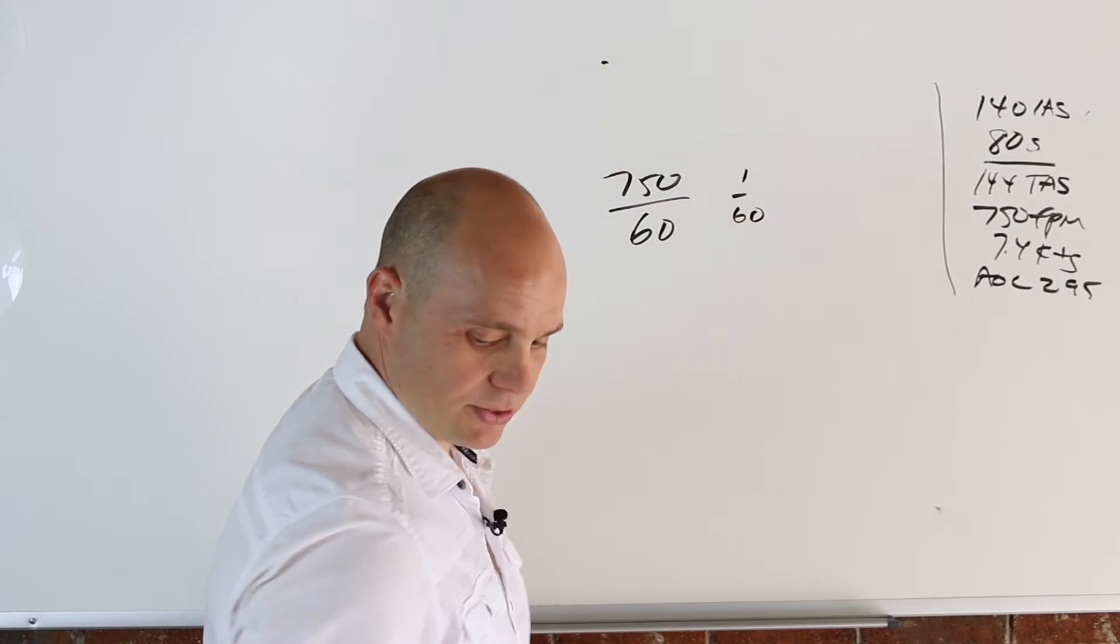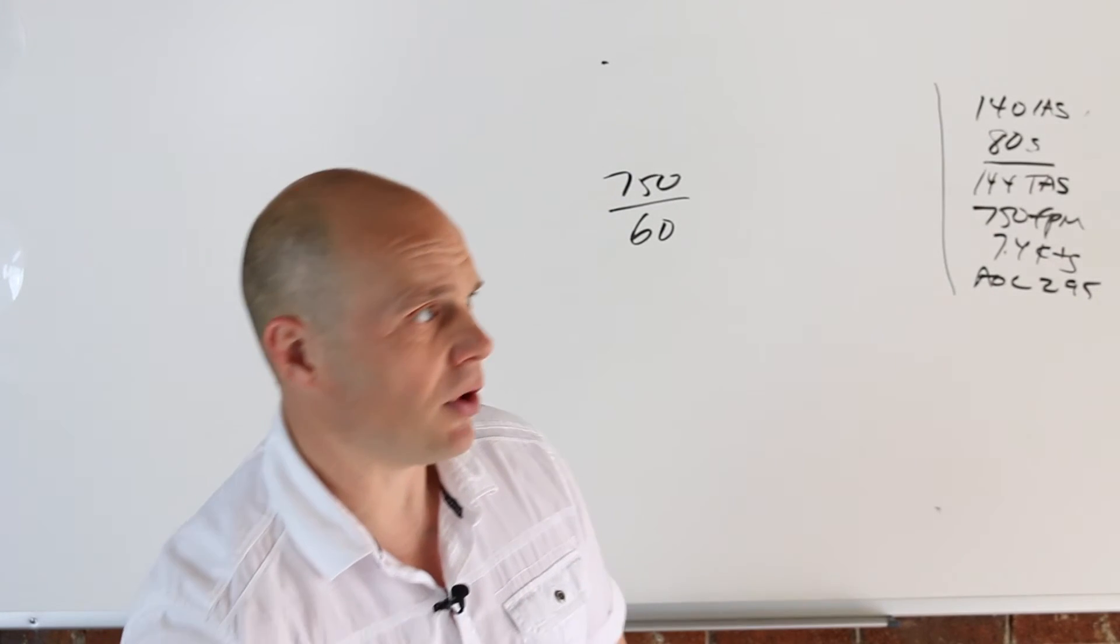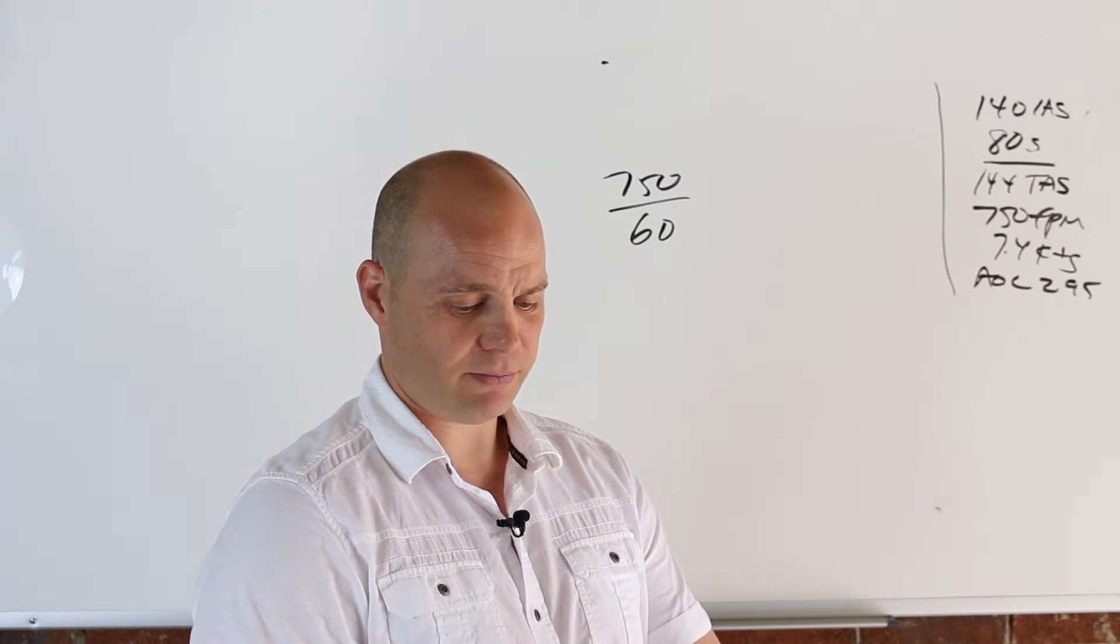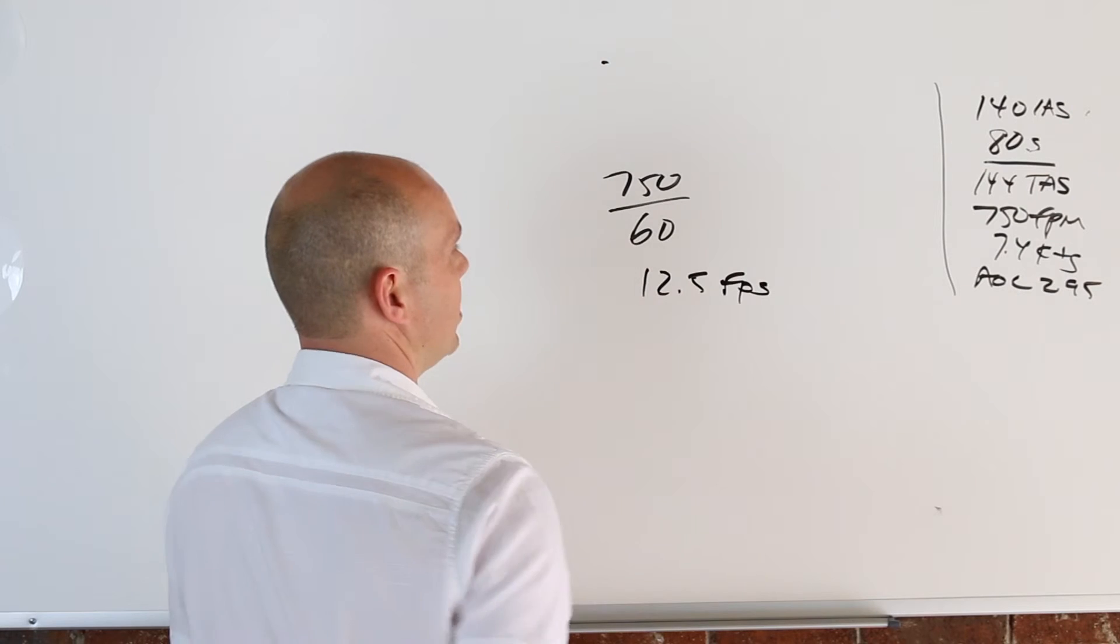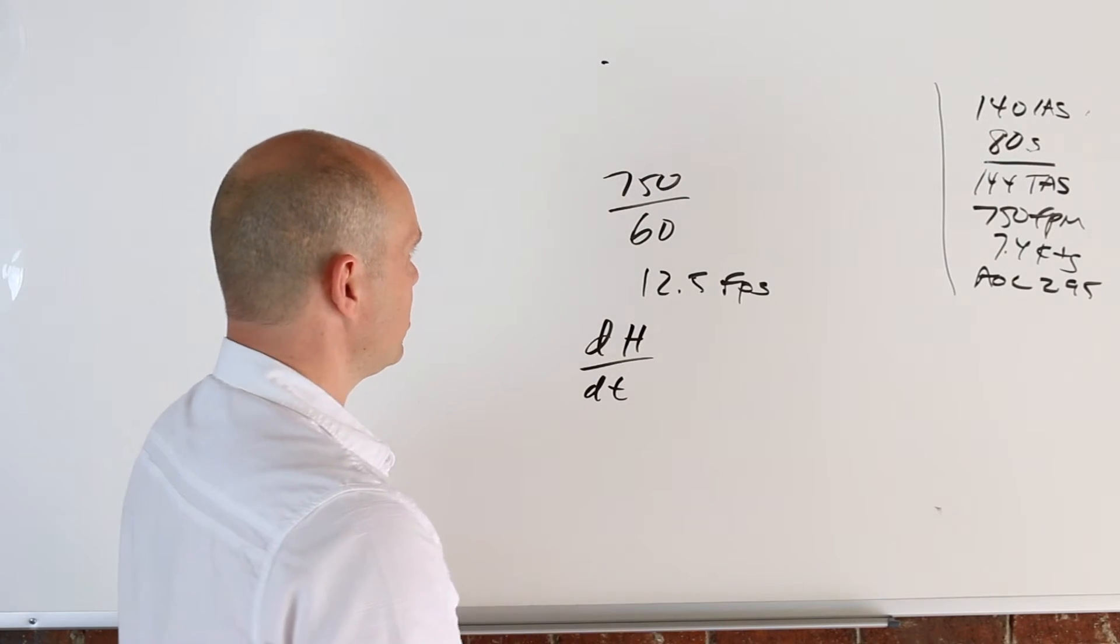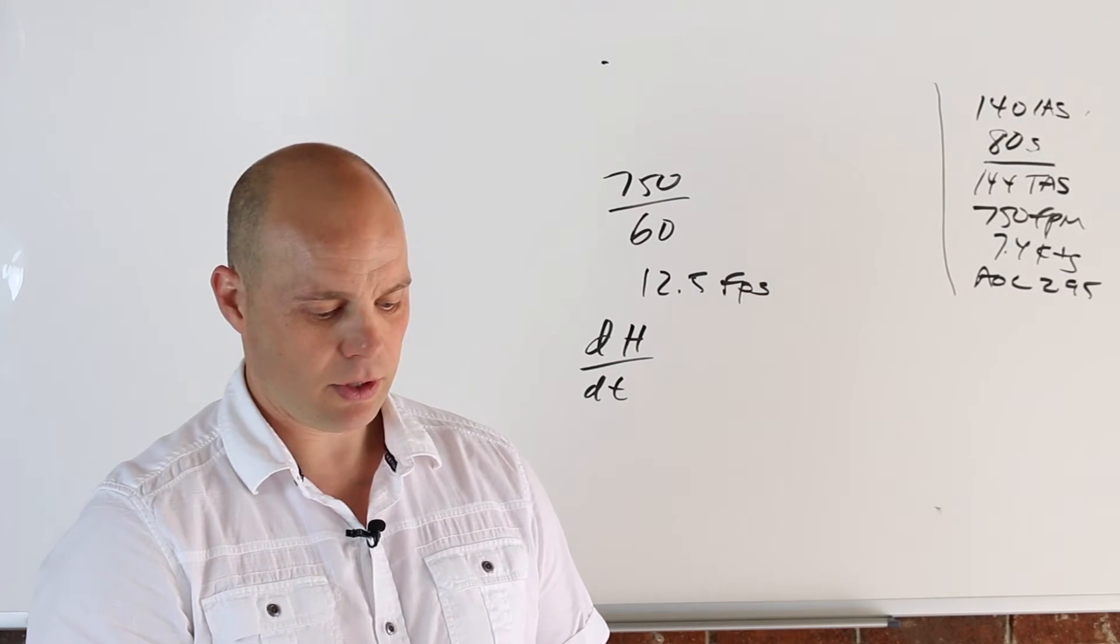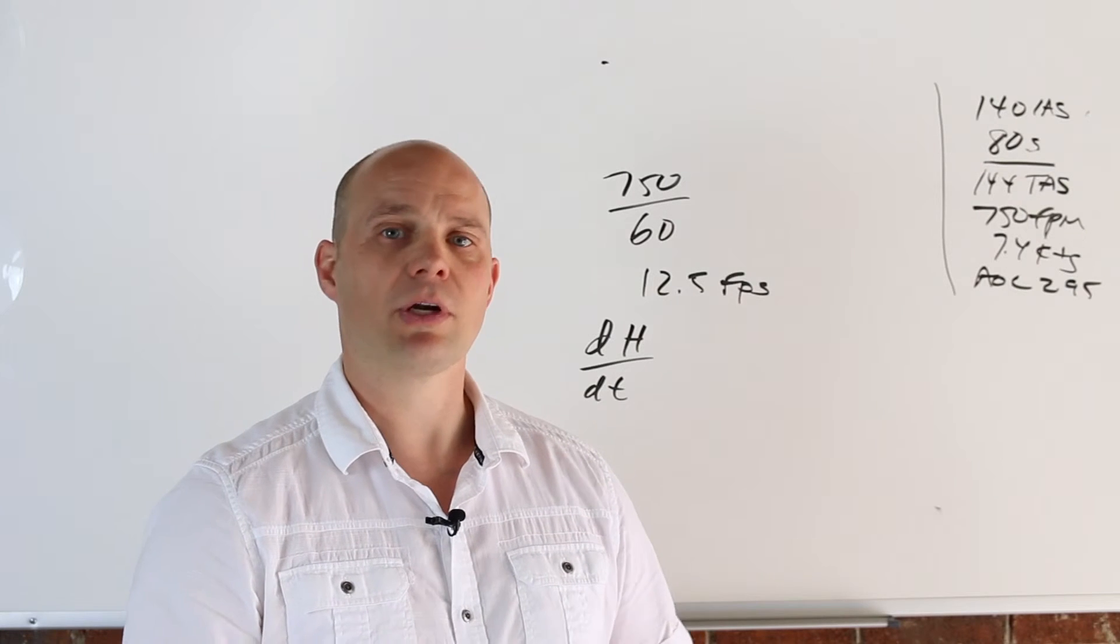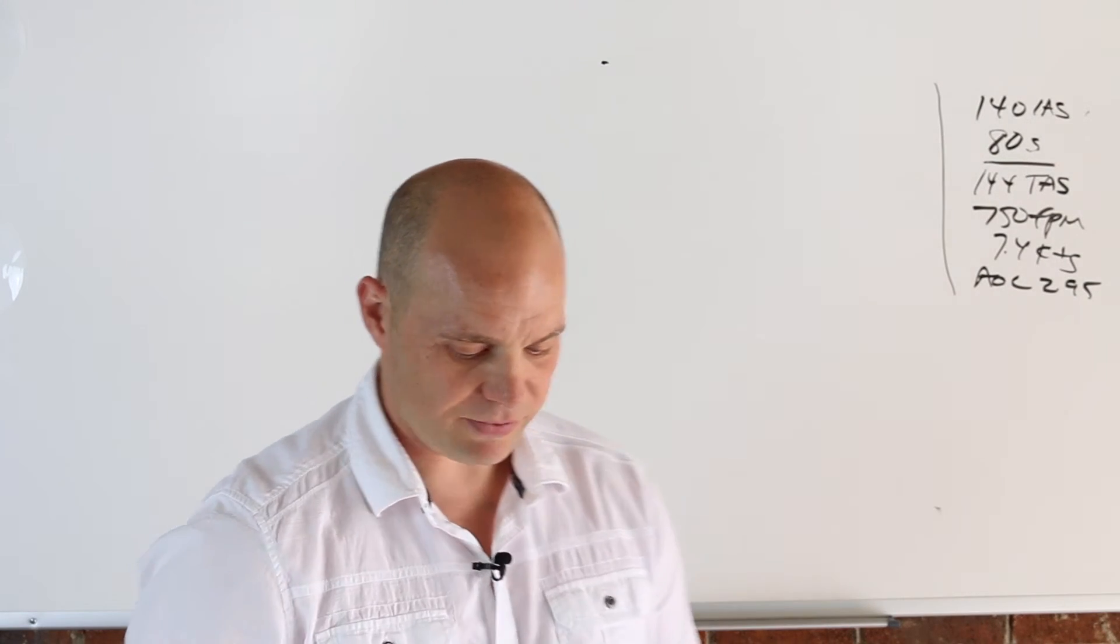So what's 750 divided by 60? Let me grab my phone here. Don't do math in public, that's like the number one thing on video, so I'll use a calculator. That's 12.5 feet per second. So that's how you would solve that. And that's kind of going back to that whole derivative of height over derivative of time. So height is your vertical speed or your rate of climb over time. So once you've determined in this particular one what your best rate of climb is, you take that and then divide it by 60 because you're trying to go to feet per second, and then you get your answer.